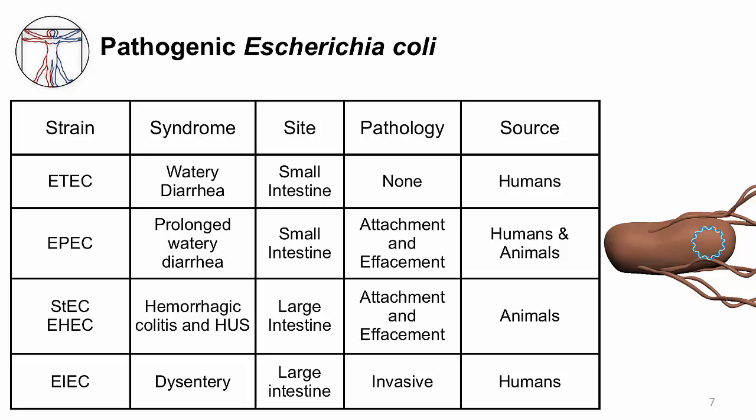Some bacteria will acquire their pathogenic traits — their virulence factors — through plasmids. Others acquire virulence factors from bacterial virus infections, also called bacteriophages, that inject them with new DNA.